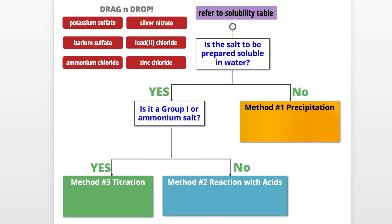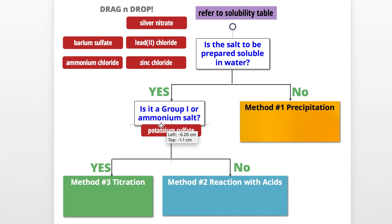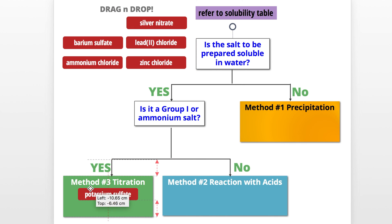Let's work through examples using the flowchart. For potassium sulfate: is it soluble in water? Yes. Is it a group 1 or ammonium salt? Yes — potassium is in group 1. Therefore the method is titration.